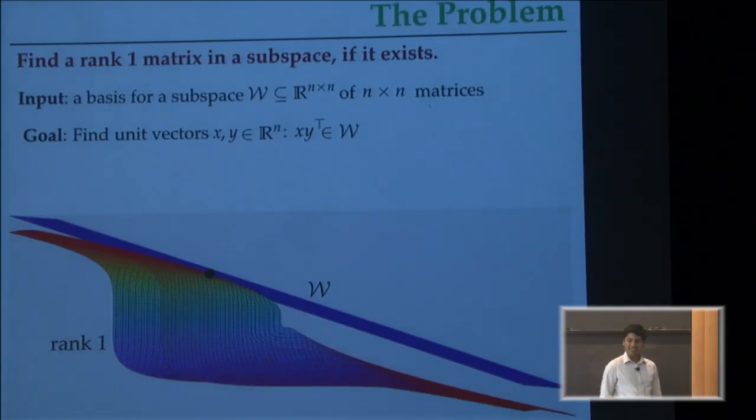So the problem is really simple. I'm going to give you a linear subspace of n by n matrices over the reals. You can imagine that I describe the subspace to you by giving a basis for it. I give you some n by n matrices, and I'm interested in the span of them. Your job is to find me unit vectors x and y in n dimensions, such that if I take the rank one matrix defined by them, then it lives in the subspace W that is given to you.